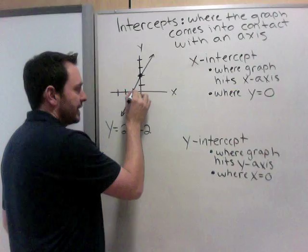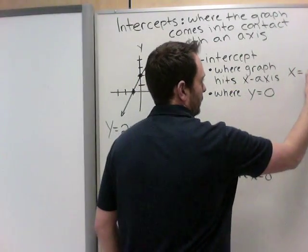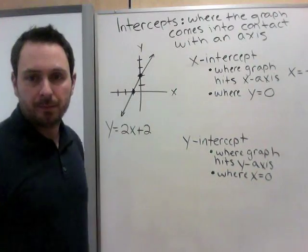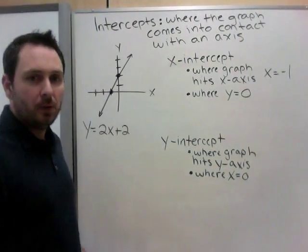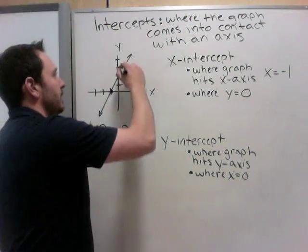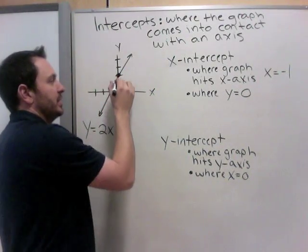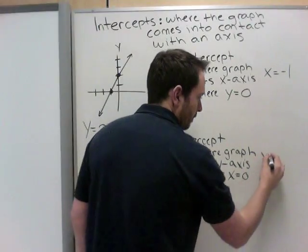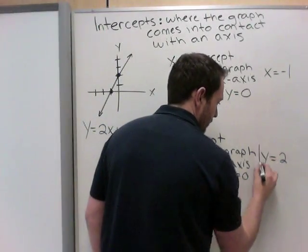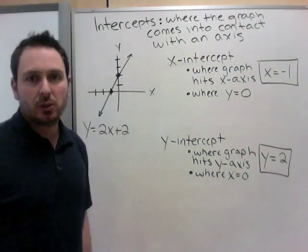So the graph hit the x-axis at x equals negative 1 is my answer. Now, my y-intercept is where the graph hits the y-axis. My y-axis is being hit right here, which is at y equals 2. So these are the intercepts for this graph.